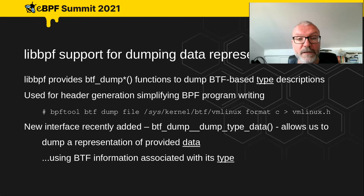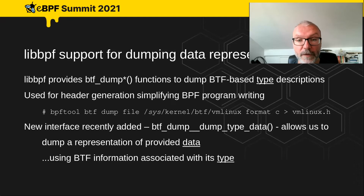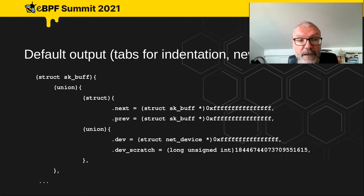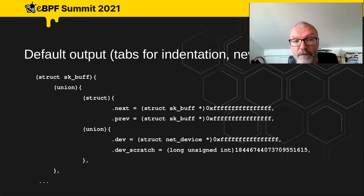Recently we've extended this functionality to support dumping not just type information but typed data — we use the information about the types to dump a representation of the provided data using the BTF information associated with its type. Here's an example: we're dumping a struct sk_buff, showing both the type information and the actual data associated with the type.